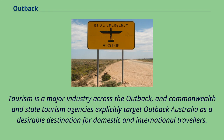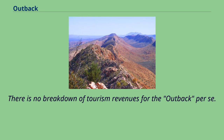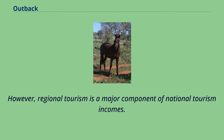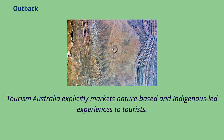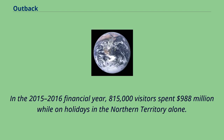Tourism is a major industry across the outback, and Commonwealth and state tourism agencies explicitly target outback Australia as a desirable destination for domestic and international travellers. There is no breakdown of tourism revenues for the outback per se; however, regional tourism is a major component of national tourism incomes. Tourism Australia explicitly markets nature-based and indigenous-led experiences to tourists. In the 2015–2016 financial year, 815,000 visitors spent $988 million while on holidays in the Northern Territory alone.